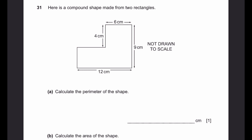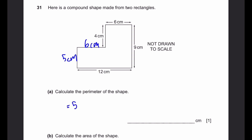Question 31A. Here's a compound shape made from two rectangles. Calculate the perimeter of the shape. The blank side is 12 minus 6 equals 6 centimeters, and another blank side is 9 minus 4 equals 5 centimeters. Adding all lengths: 5 plus 6 plus 4 plus 6 plus 9 plus 12 equals 42 centimeters.